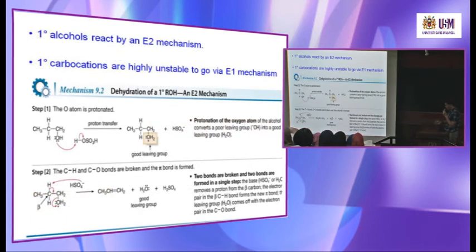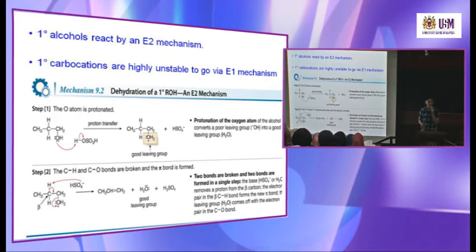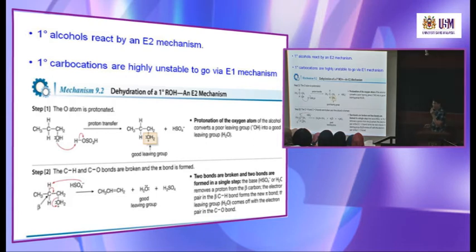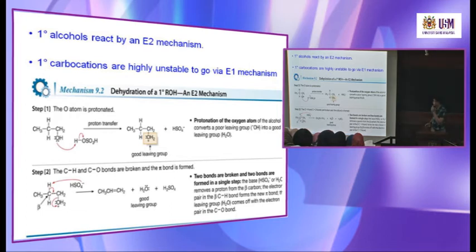The mechanism — you have to go back and practice. The first step is always the electron lone pair attacking the positive proton, forming a water molecule, which is a better leaving group compared to the OH group. If this is a primary alcohol, it undergoes E2 reaction. Once you form a better leaving group, the base from H₂SO₄ attacks the beta hydrogen and you get a double bond — a standard mechanism from the last chapter.